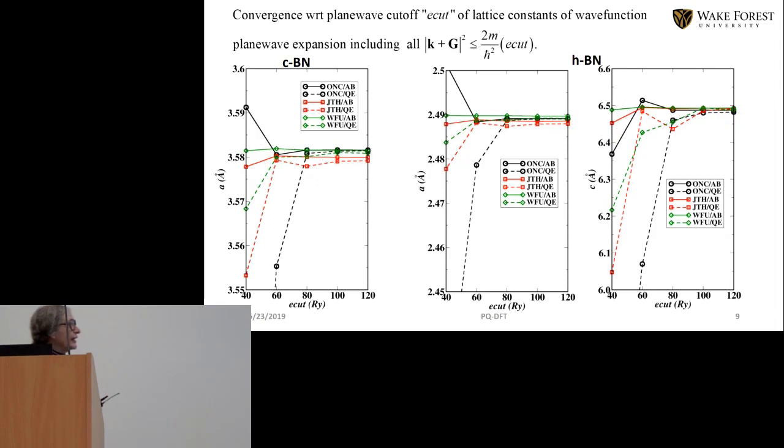But in addition to the convergence of the energy difference is the convergence of the optimized lattice constants and there too you see that both Avinet and quantum expresso have different convergence properties that they don't track the same convergence, they have different rates of convergence and different values at their non-converged values. But this is again a very large scale so the differences are 10 to minus 3 angstrom, so perhaps beyond what we expect to be meaningful.